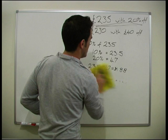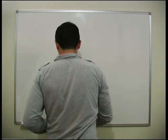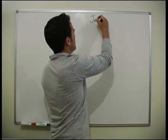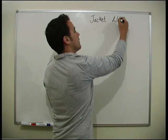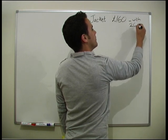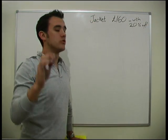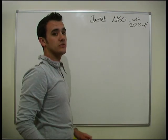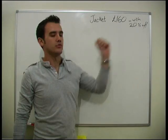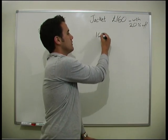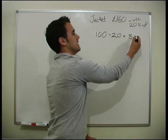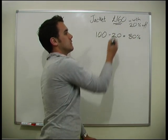We'll do one more question and then you can have a practice. This one's a bit more tricky. We're going to a shop and a really nice jacket is on sale for £160. But that's already had 20% taken off. So what was the original price? We can't just take 20% of 160 because we need to know the original price. If 20% has already been taken off, we started with 100% and took away 20%, which leaves us with 80%. So that £160 represents 80%.